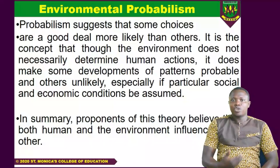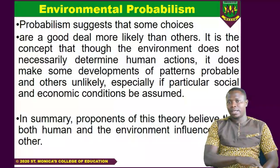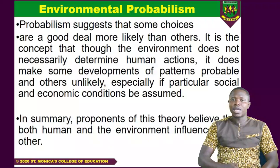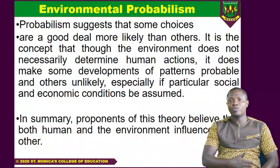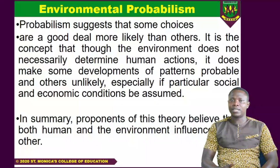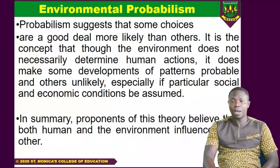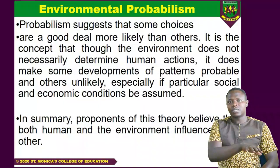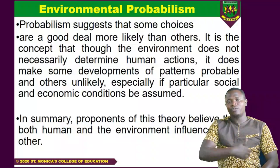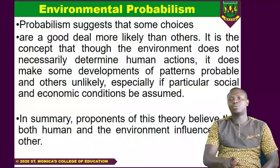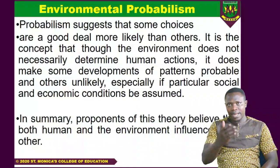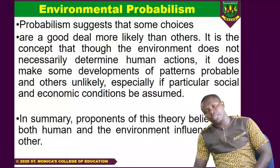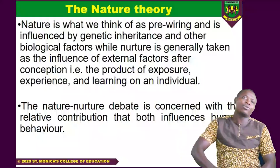In summary, proponents of environmental probabilism believe that both human beings and the environment influence each other. The environment can influence you to wear certain clothes; in the same way, man can influence the environment by adapting to it. Human beings, realizing that during winter in the temperate zones the temperatures are very low, are able to adapt by manufacturing pullovers and sweaters to combat the environment. In summer, those in temperate regions manufacture sleeveless wear to adapt. The environment can influence human beings, and human beings can influence the environment.